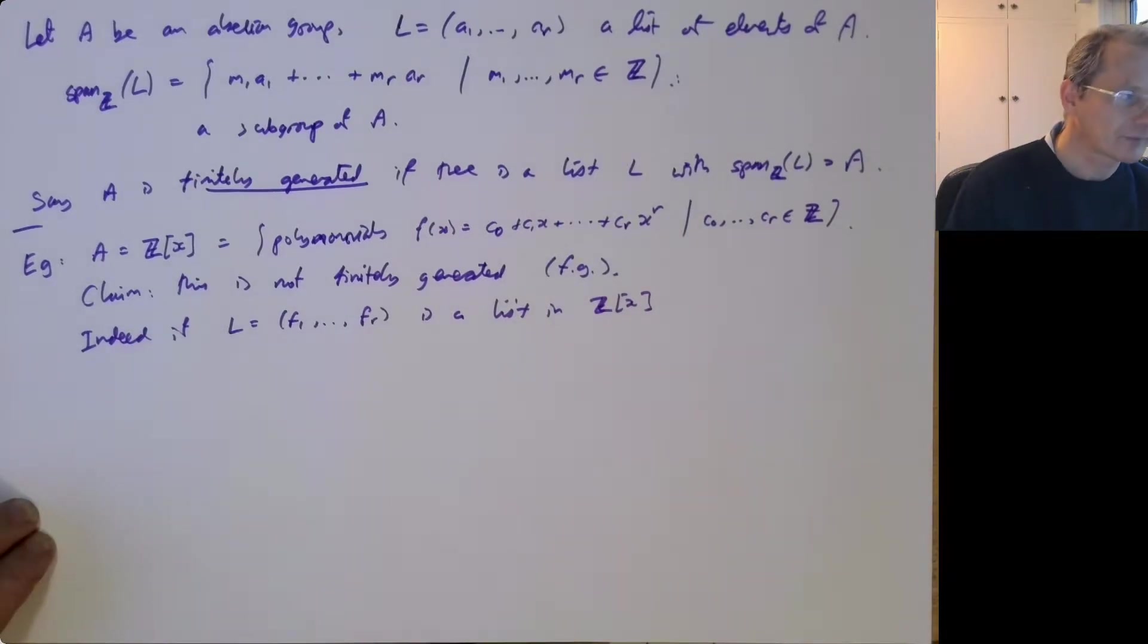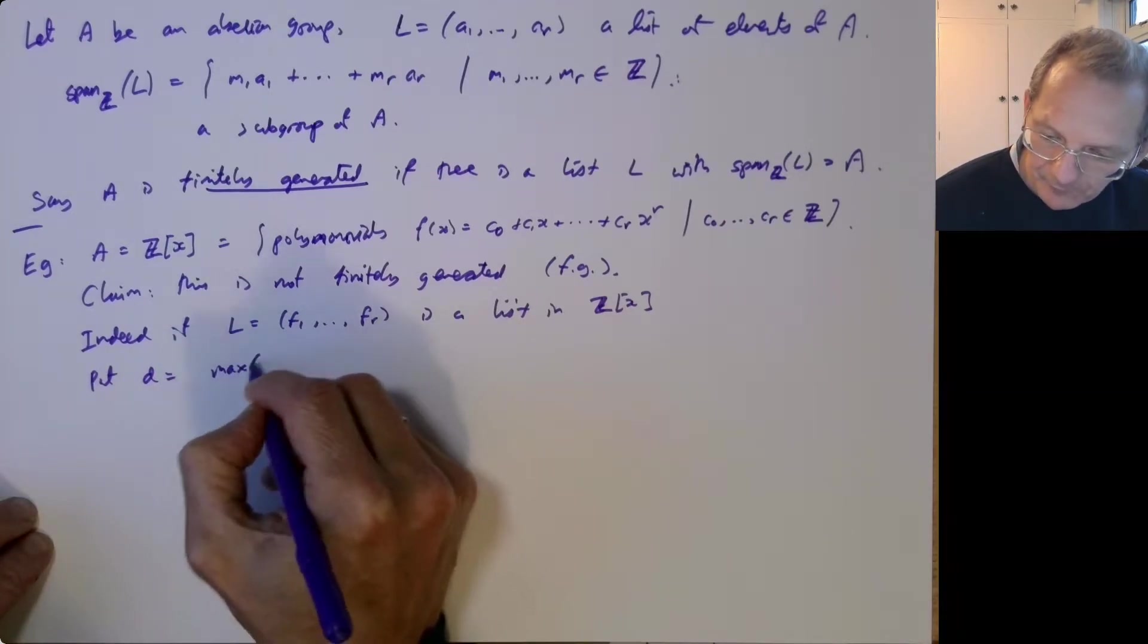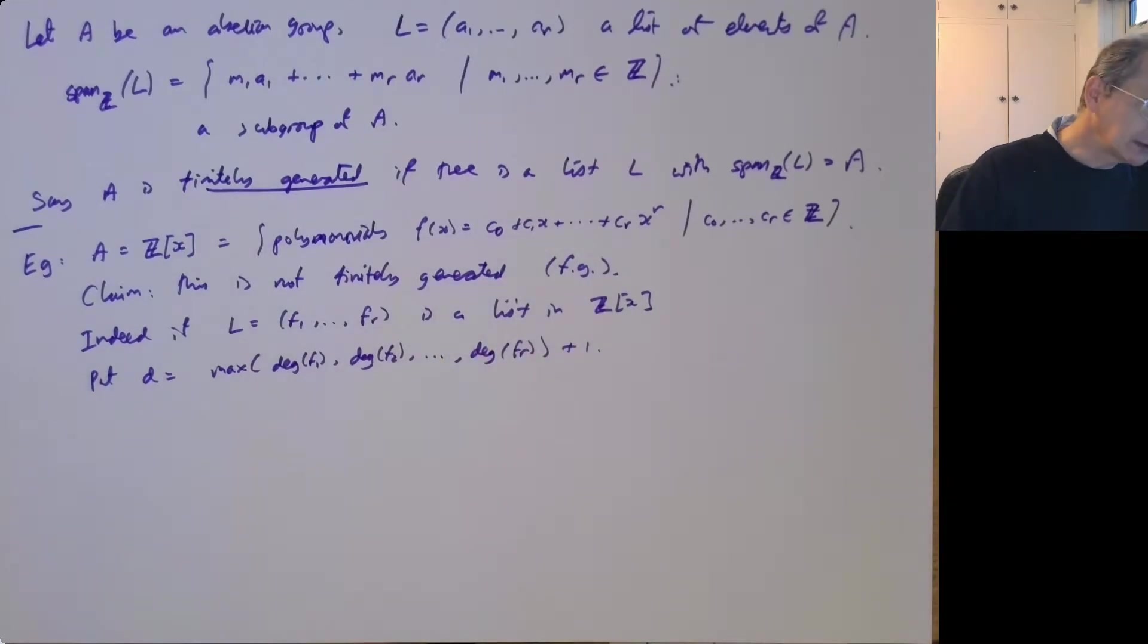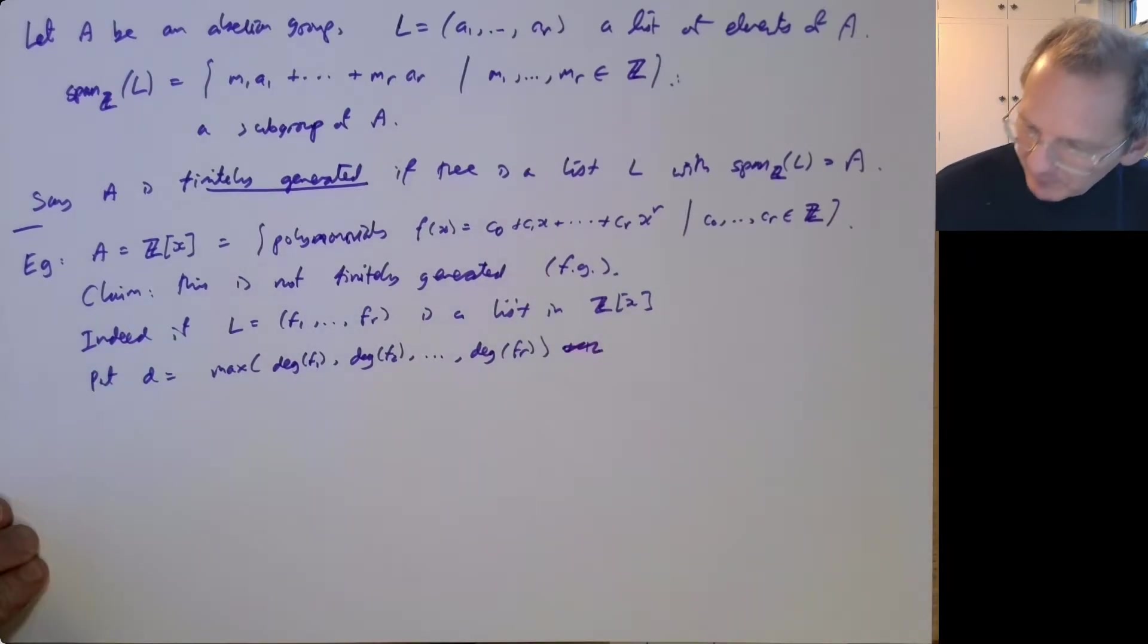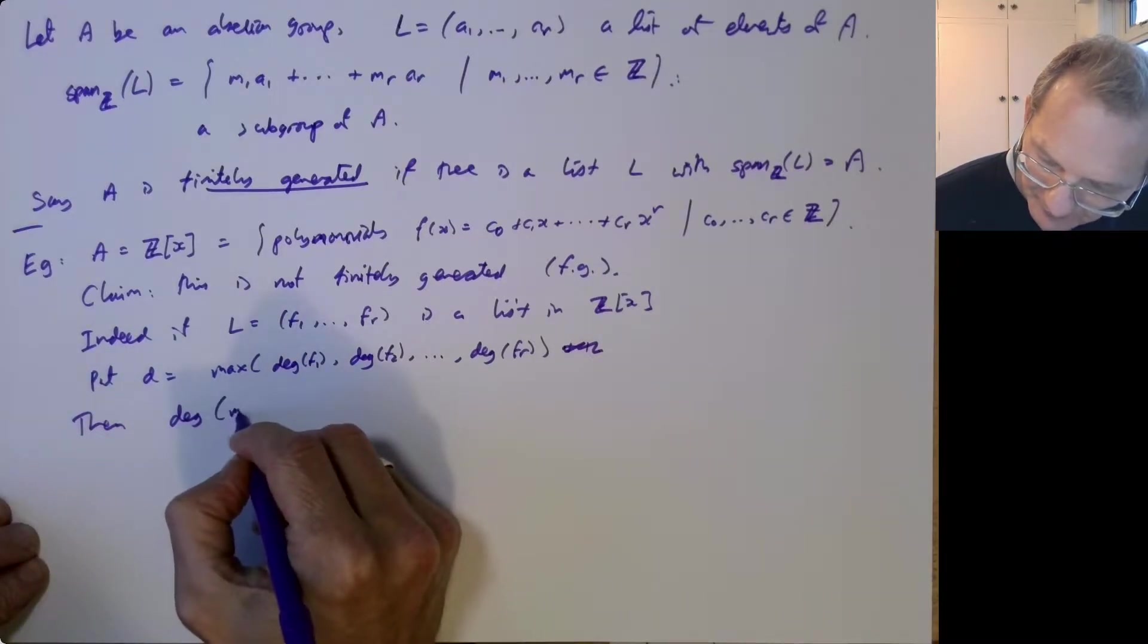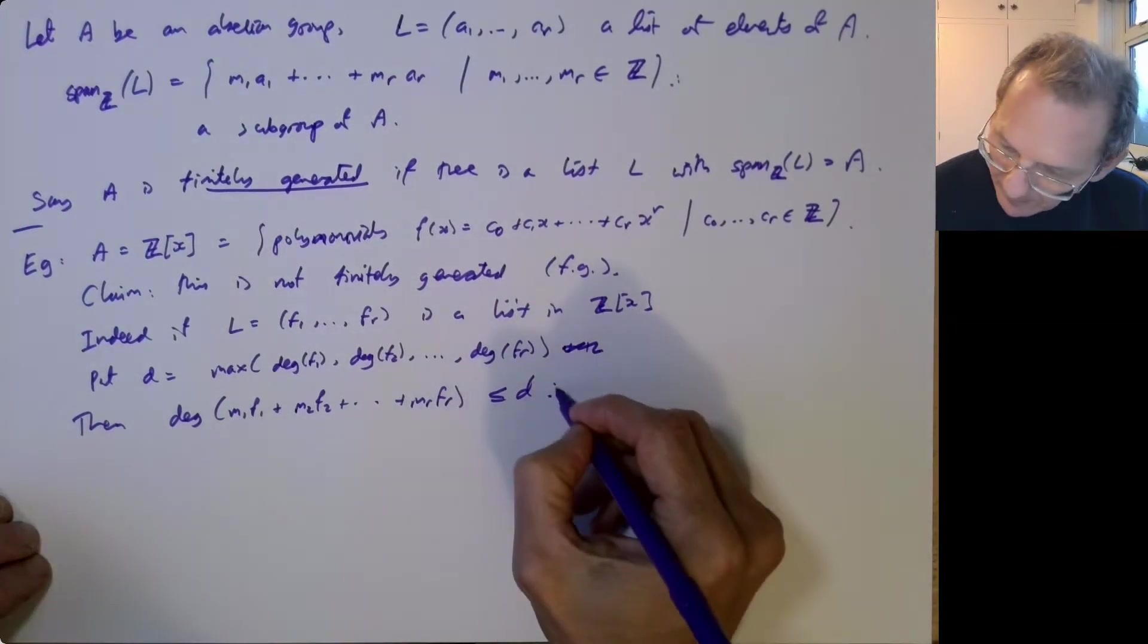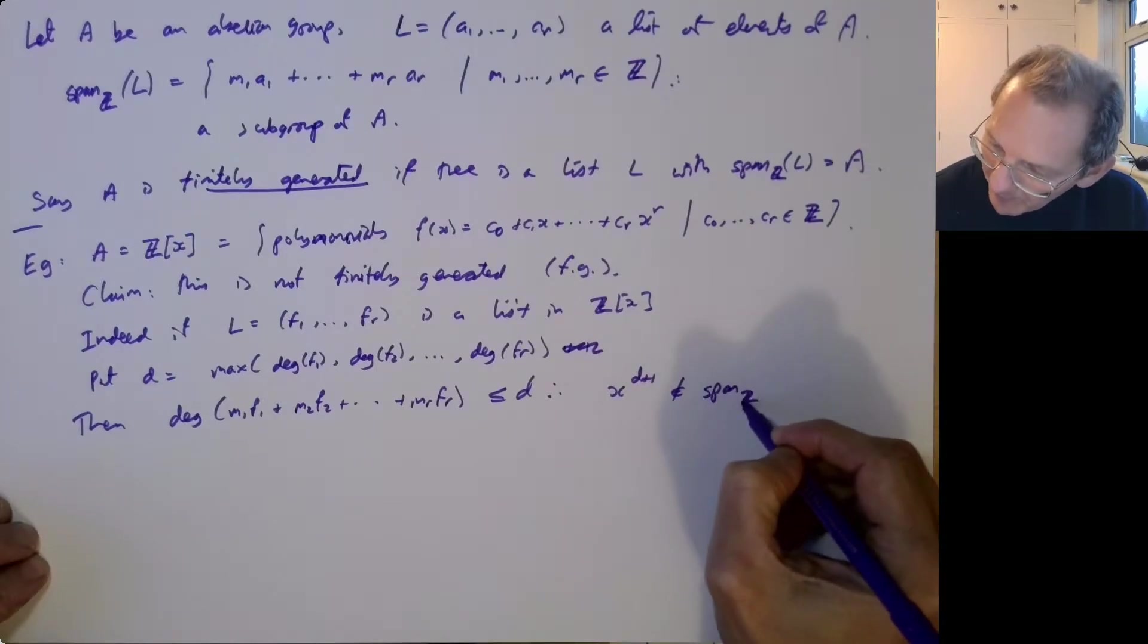So suppose we've got a list in Z[x], then put D as the maximum of the degree of F1, F2, maximum of all the degrees. Then the degree of M1F1 plus M2F2 up to MRFR, that's also going to be less than or equal to D. And therefore, if you look at x to the D plus one, well then that's not in the span over Z of our list L.